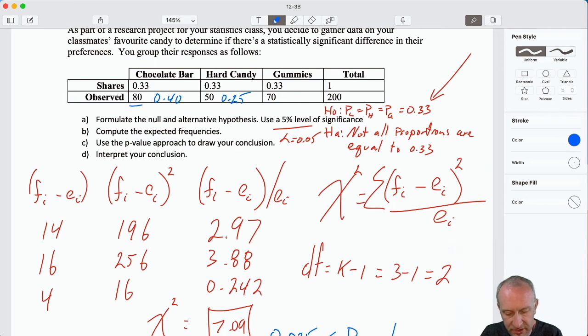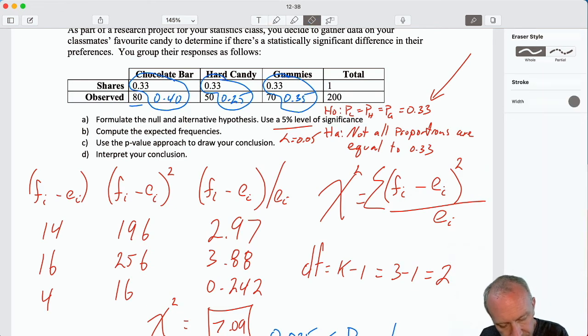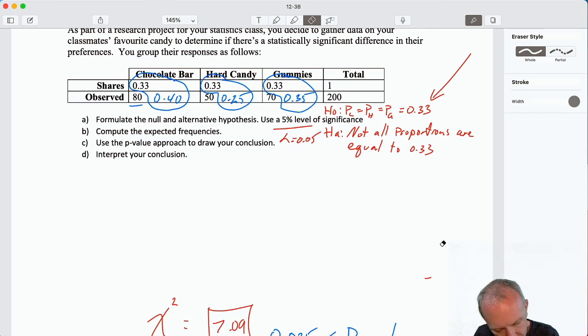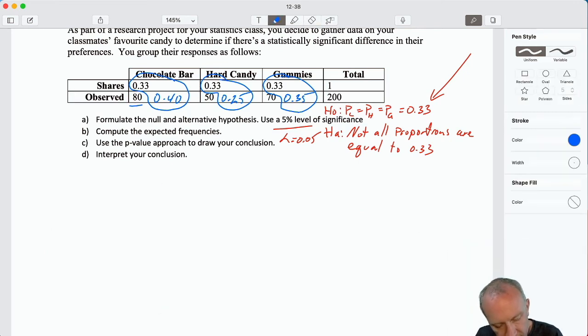So that was 40 percent said they preferred the chocolate bar, 50 out of 200, well that's 25 percent, and 70 out of 200, that was 35 percent. So now I can just compare those probabilities and again we can do it numerically just looking at that table comparing our prior belief to what we now actually observe. So here again I'm just going to clean out some space here, don't need much.